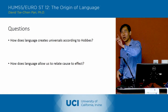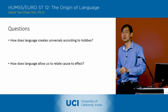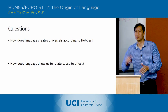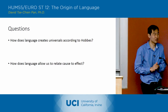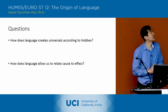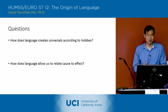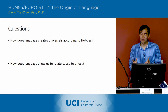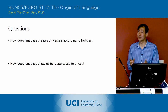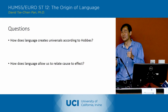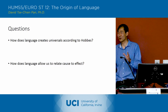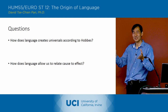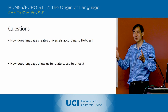All right, so we had a question. Then we've got a couple minutes here. How does language then create universals according to Hobbes? I know it's complicated, but can we call it to us?